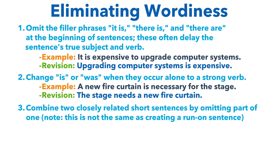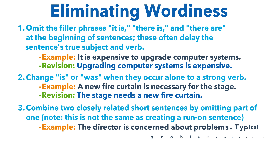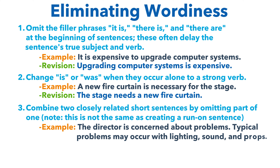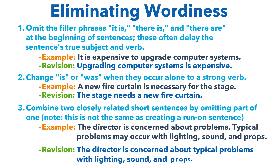A third way is to combine two closely related short sentences by omitting part of one. Note that this is not the same as creating a run-on sentence. For example, instead of 'The director is concerned about problems. Typical problems may occur with lighting, sound, and props,' you could write 'The director is concerned about typical problems with lighting, sound, and props.'